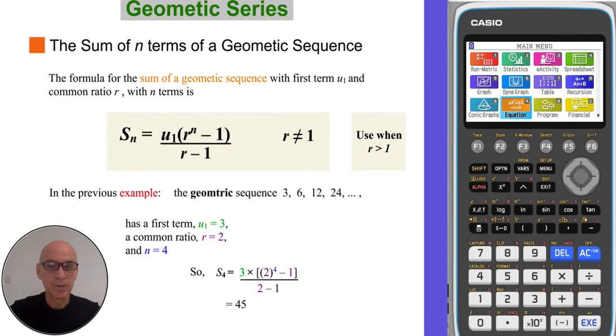The formula for the sum of a geometric sequence is stated here. And it states that Sn is equal to u1 multiplied by r to the power of n, subtract 1, divided by r, take away 1, as shown. Where u1 is the first term in the sequence, r is the common ratio in the sequence, and n the number of terms.